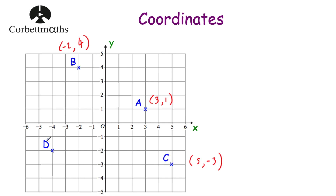Finally, point D. We're going to negative 4 along the x-axis and then down 2. So the x-coordinate is negative 4, and then we're going down 2, so the y-coordinate is negative 2. The coordinates of point D would be (-4, -2).